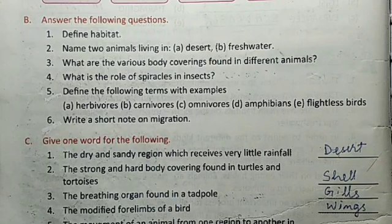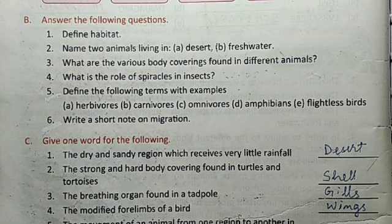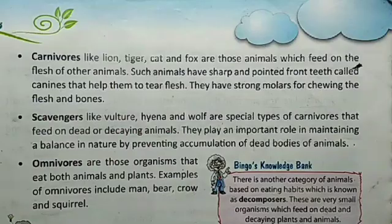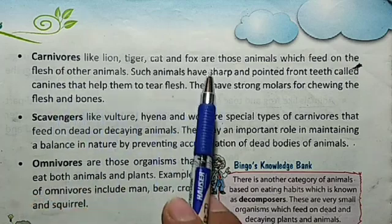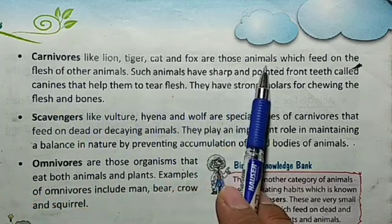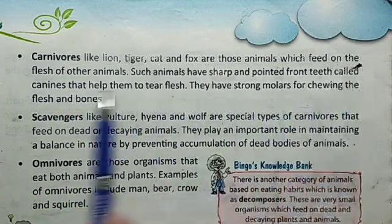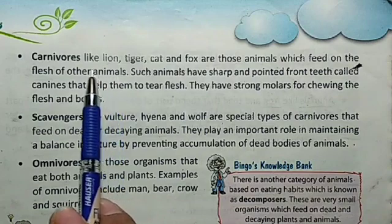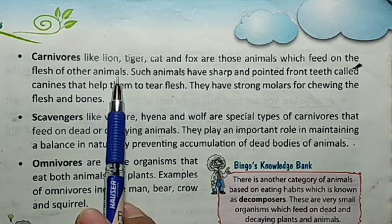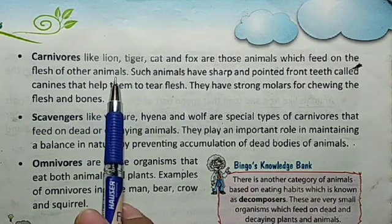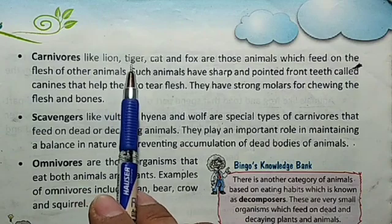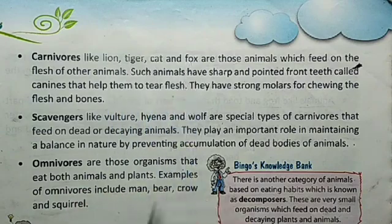Number 2 — carnivores. Carnivores are those animals which feed on the flesh of other animals. Some examples of carnivores are lion, tiger, cat, and fox.